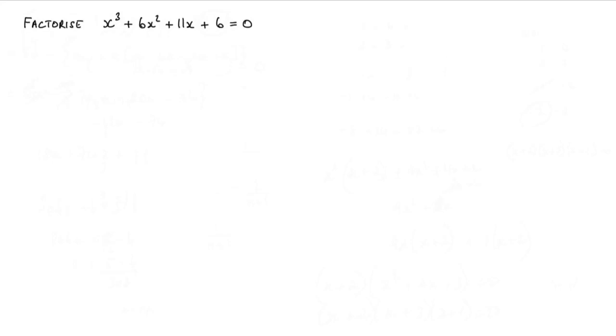In this question we're asked to factorize x cubed plus 6x squared plus 11x plus 6 equals 0. To get this cubic equation, we would hope that it would come from three individual factors multiplied together.